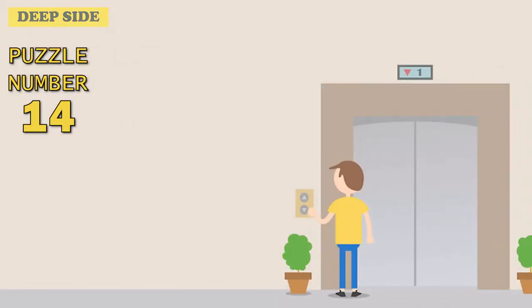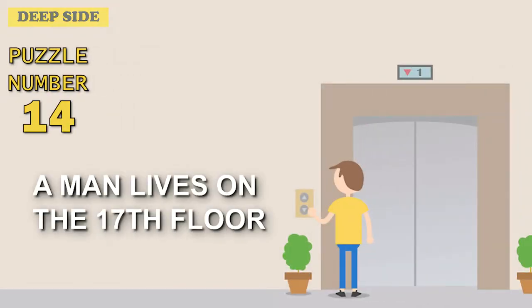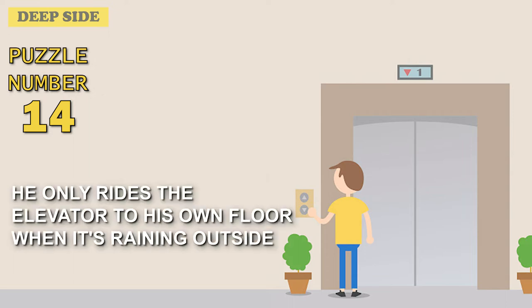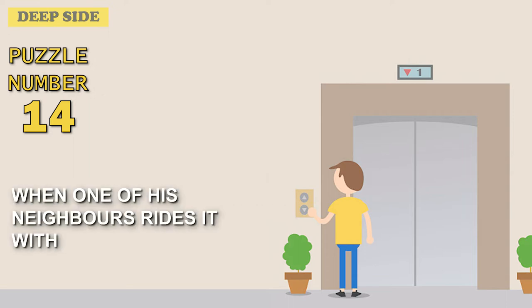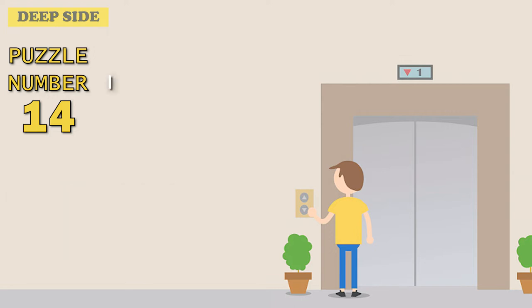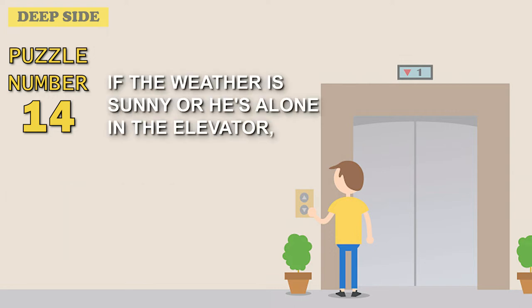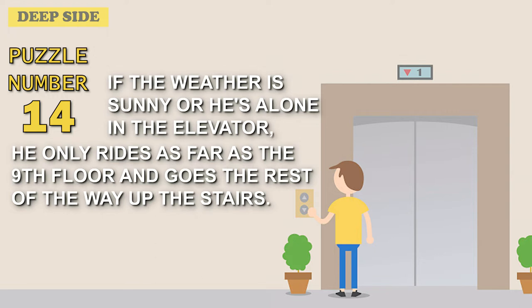Puzzle number 14. A man lives on the 17th floor. He only rides the elevator to his own floor when it's raining outside or when one of his neighbors rides it with him. If the weather is sunny or he's alone in the elevator, he only rides as far as the ninth floor and goes the rest of the way up the stairs. Why?